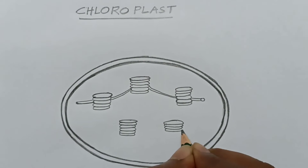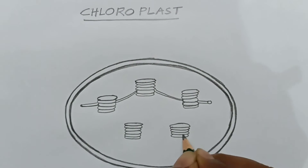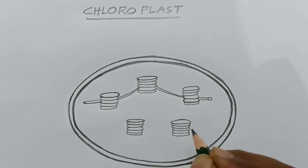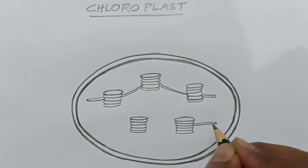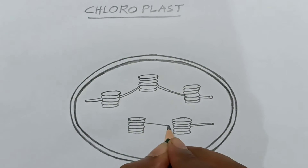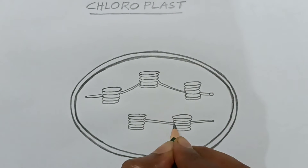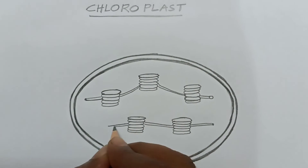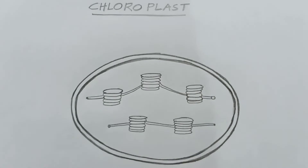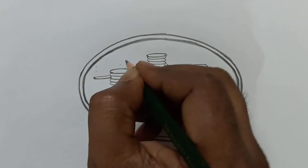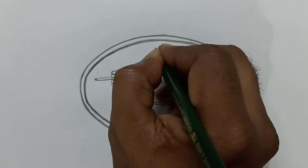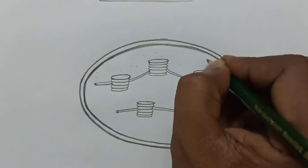These are very important parts in the chloroplast where light reactions occur. This area is the stroma.